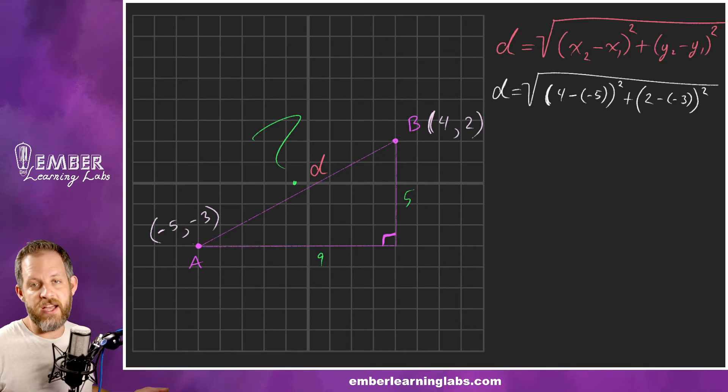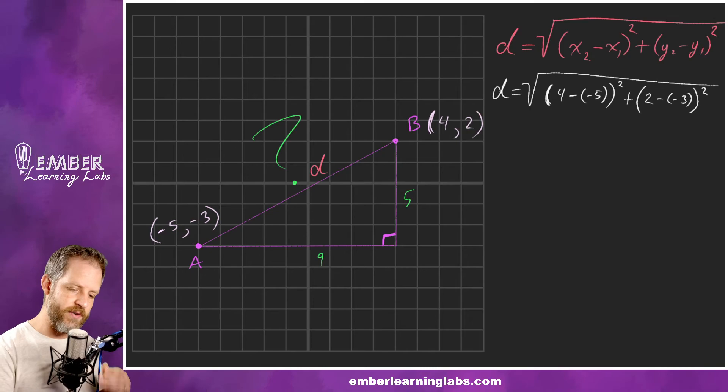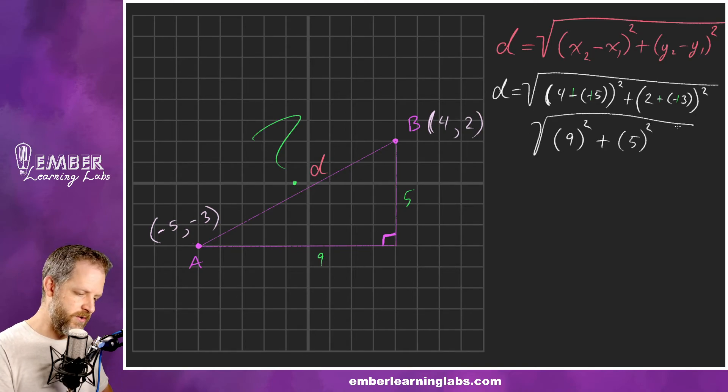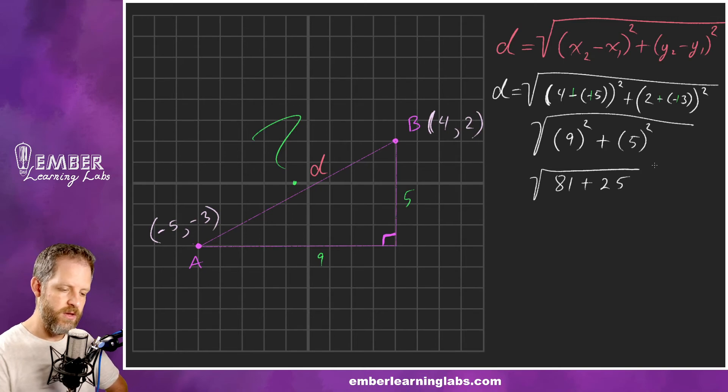We just walk through order of operations. Inside here we've got a ka-ching ka-ching, so this turns into 4 plus 5 (which is 9) squared, plus 2 plus 3 (because of the ka-ching ka-ching) is 5 squared. Don't forget to bring down the square root. 9 squared, 9 times 9 is 81, plus 5 times 5 or 5 squared is 25. Don't forget to bring down the square root. 81 plus 25 is 106. Square root of 106.